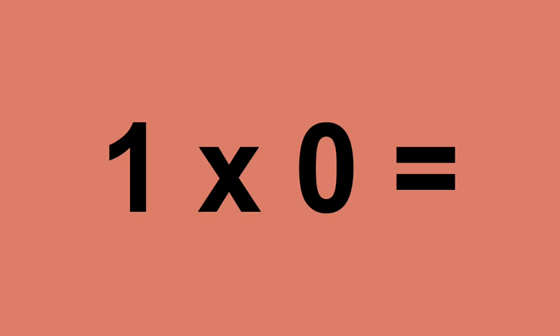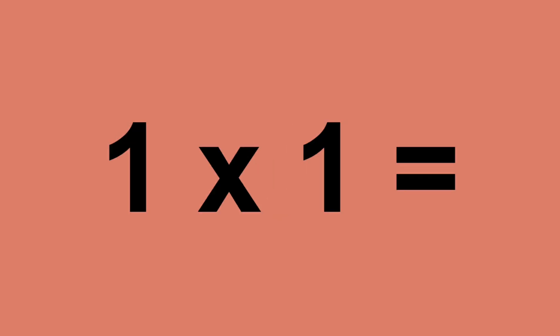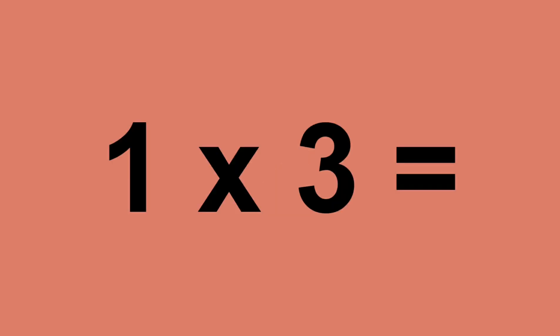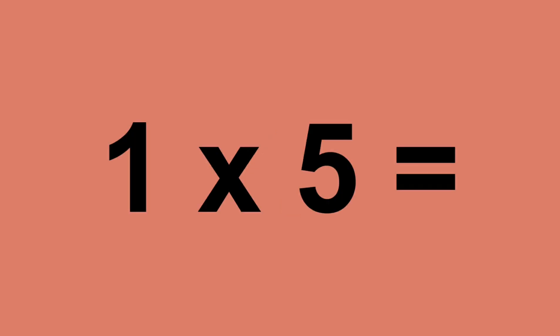One times zero equals zero. One times one equals one. One times two equals two. One times three equals three. One times four equals four.